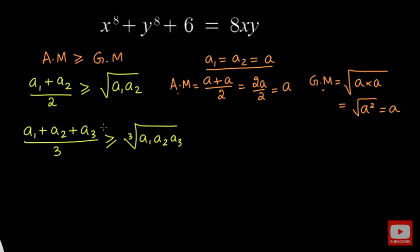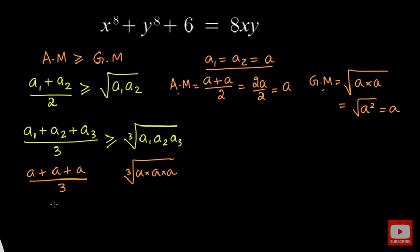That happens in the case of three numbers as well. If the numbers are equal, the arithmetic mean will be a plus a plus a over 3 and the geometric mean will be the cube root of a times a times a. That gives 3a over 3 which is a, and the cube root of a cubed is also a. So the arithmetic mean and geometric mean are equal to each other when all numbers are equal. Keep this point in mind — it's very much required in this problem.